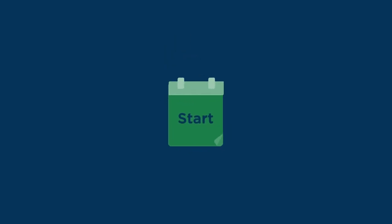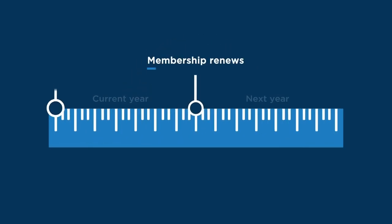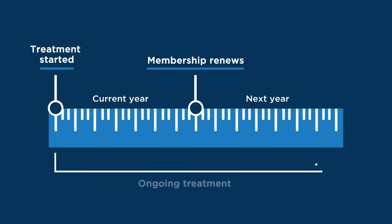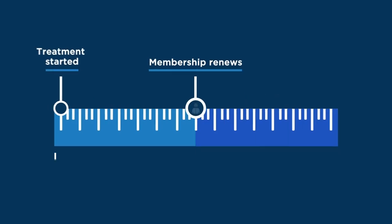Your excess restarts at the beginning of each membership year, even if your treatment is ongoing. So your excess could apply twice to a single claim if your treatment begins in one membership year and continues into the next year.